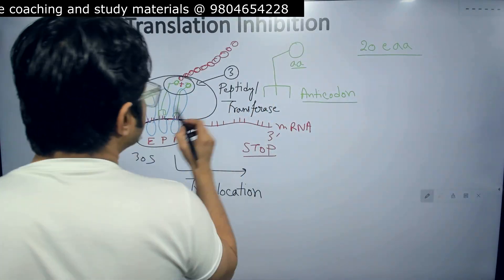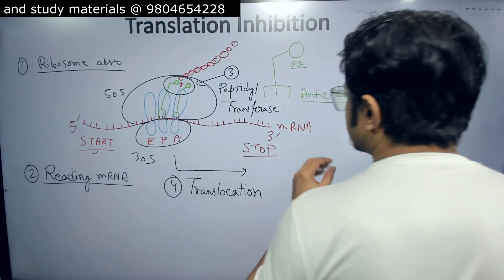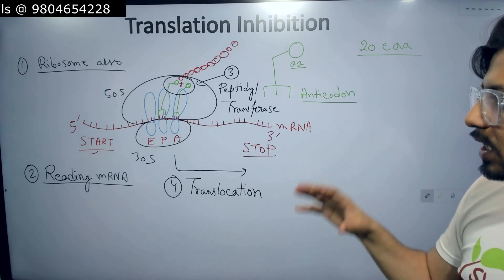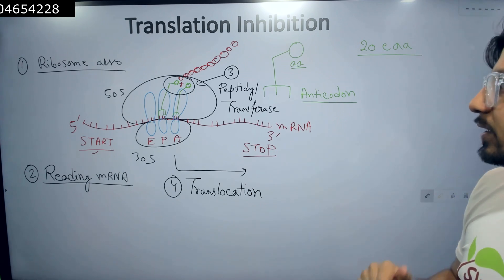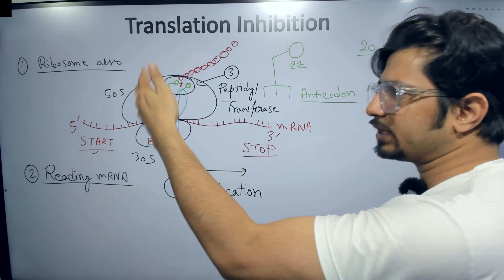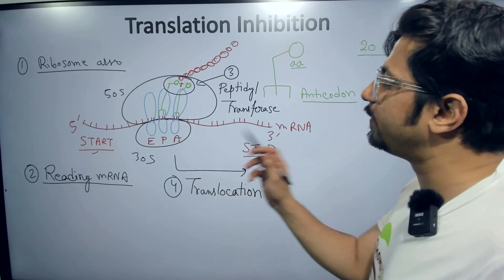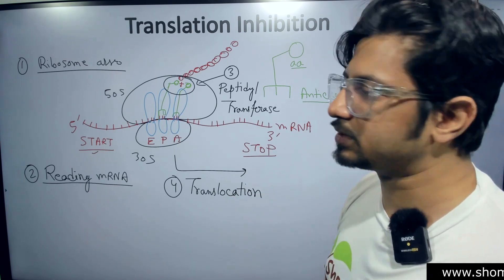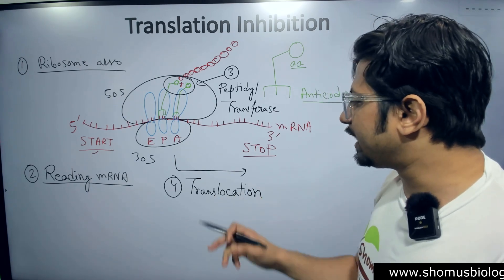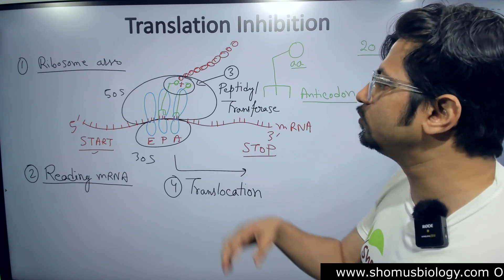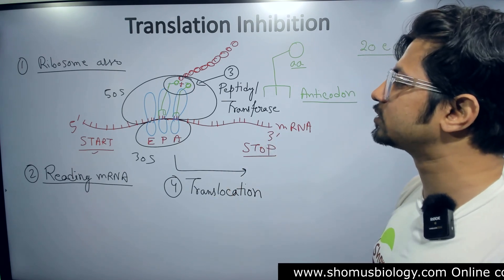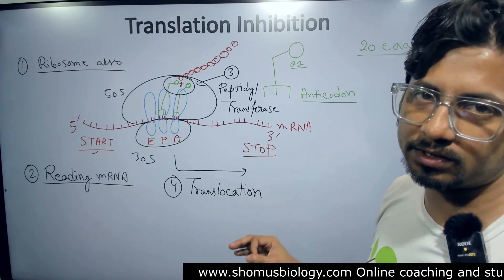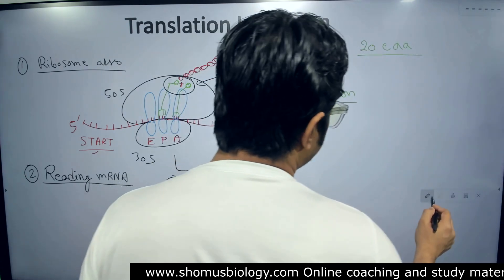If any of these activities — peptidyl transferase or translocation — are blocked by antibiotics, it will prevent the process of protein synthesis in bacteria. There are antibiotics that block peptidyl transferase activity, antibiotics that prevent proper reading of the mRNA so the tRNA is not brought correctly, and antibiotics that block translocation — preventing the movement of the ribosome along the mRNA.